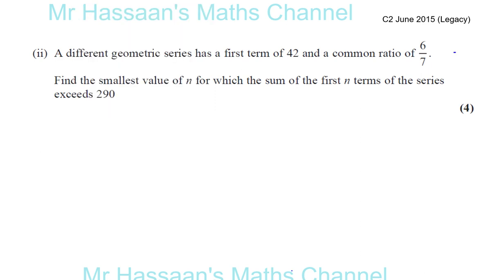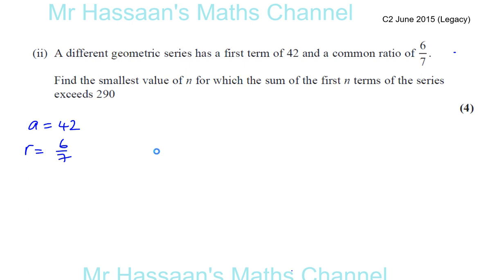A different geometric series has a first term of 42, so A is equal to 42, and a common ratio of 6 over 7, so R is equal to 6 over 7. Find the smallest value of N for which the sum of the first N terms of the series exceeds 290.